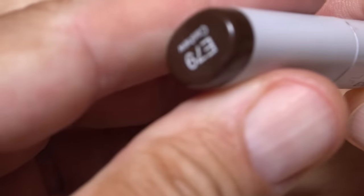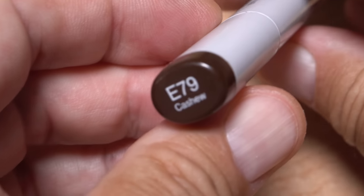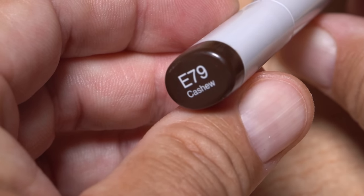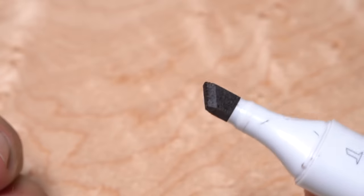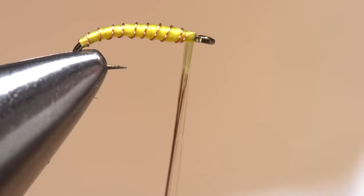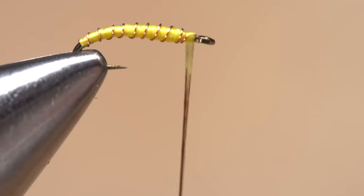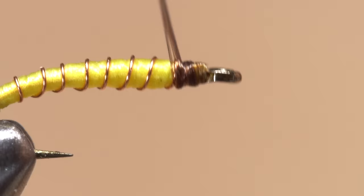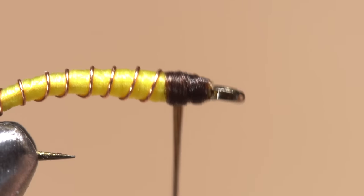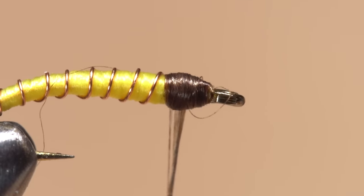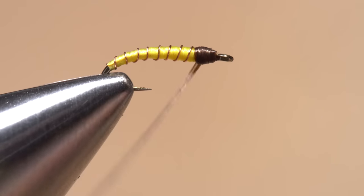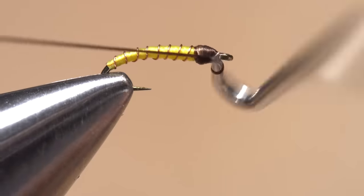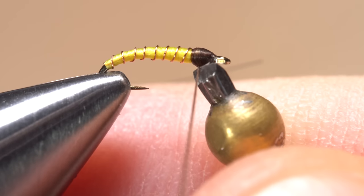Rather than change thread colors at this point to produce the head of the fly, I cheat and use a permanent marker to change thread color instead. Here, a dark brown, again to closely match the naturals. I color about three inches of thread, which is generally enough to build up a small head on the fly and still have enough brown thread remaining to complete a five or six-turn, back-to-front whip finish before seating the knot well and snipping or cutting my tying thread free.